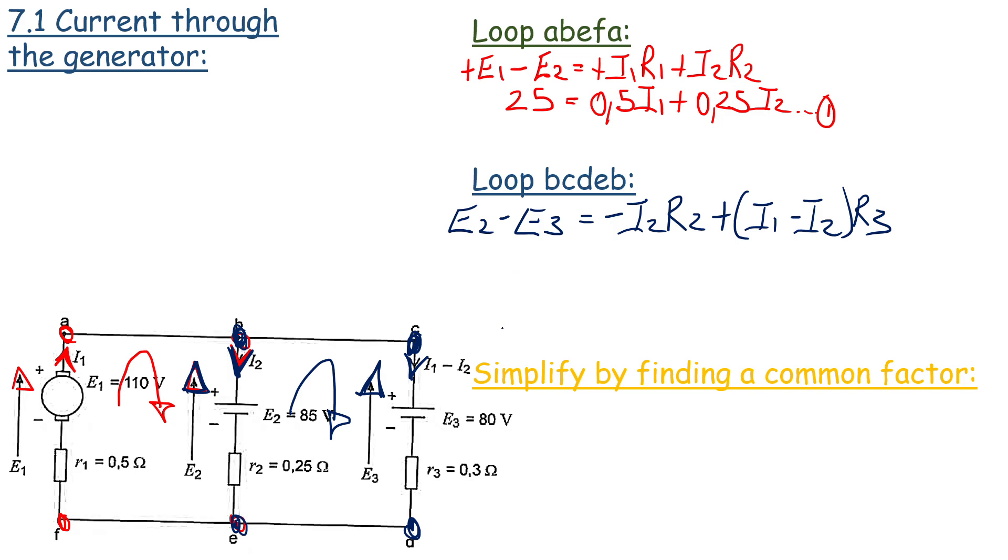Right, so 85 volts minus 80 volts will give us 5 volts. We have negative 0.25 times I2 and then our third resistor is 0.3 so it's going to be plus 0.3 I3. Right, so you must look for the common factors. You'll see I2 is a negative and I3 is a negative. So our equation is going to be plus 0.3 I1 minus 0.55 I2 and this becomes equation 2.